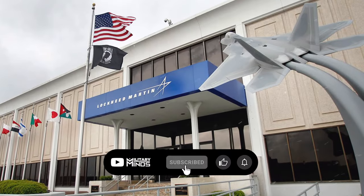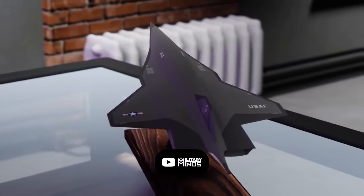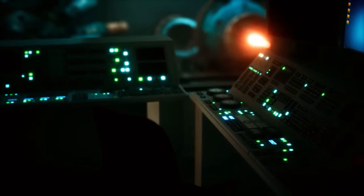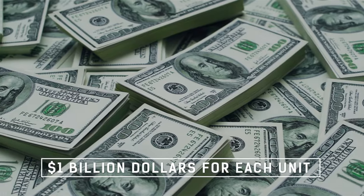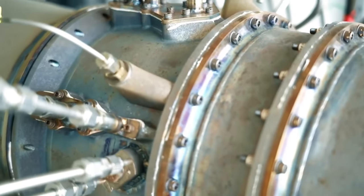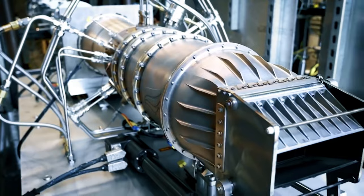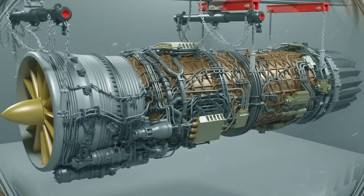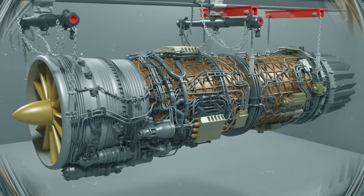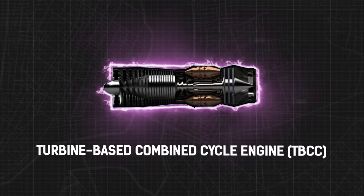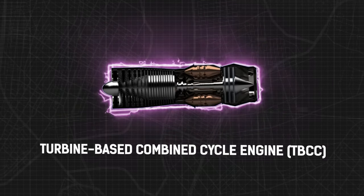The first question we ask ourselves is how are they doing this when industry giant Lockheed Martin has been working on their own hypersonic jet, the SR-72 son of Blackbird, for almost a decade now. And each unit is expected to cost over $1 billion. Well, to answer that question, we need to take a look at the engine powering the aircraft, the Quarter Horse. It's a turbojet-ramjet hybrid, known as the turbine-based combined cycle, or TBCC engine.